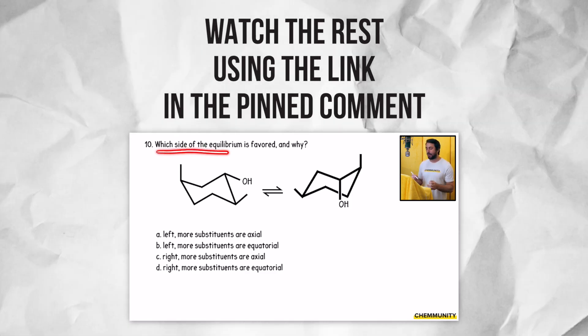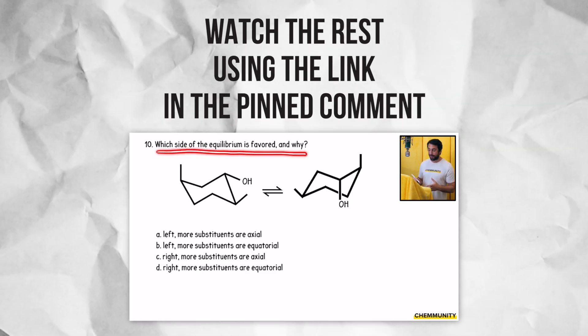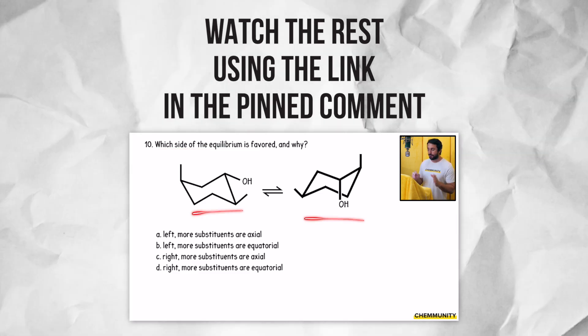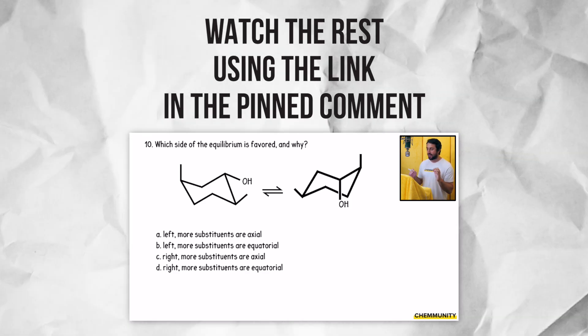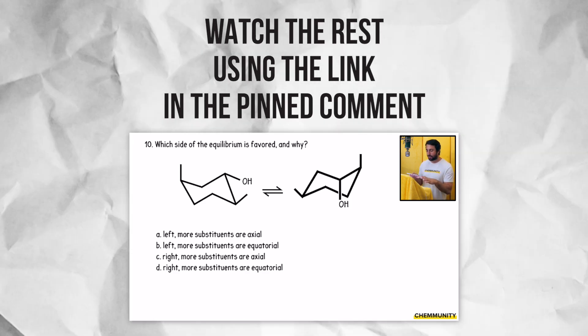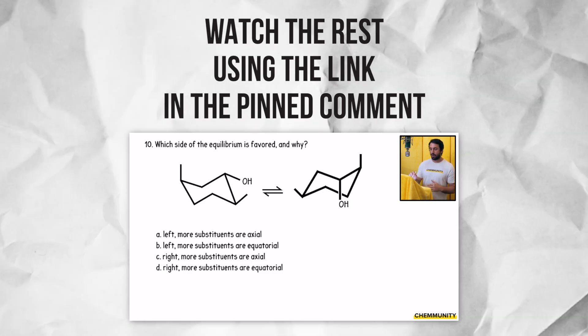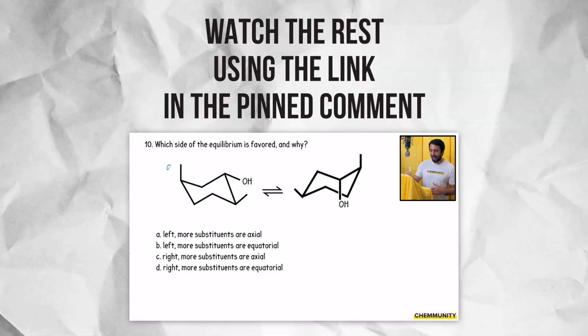Number 10 asks, which side of the equilibrium is favored and why? So we have two chair conformations for this compound. They're going to be of differing energies, and that is going to have to do with the substituents being either equatorial or axial. So here we have a methyl that is axial.